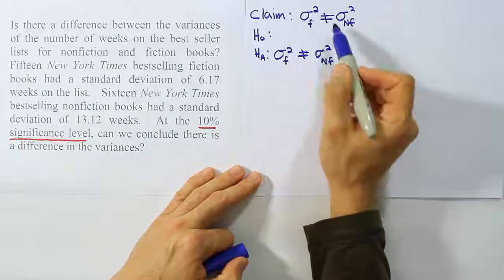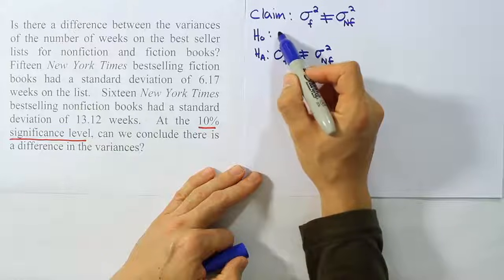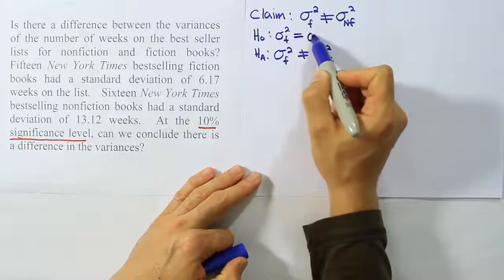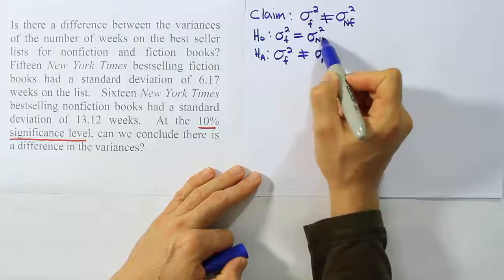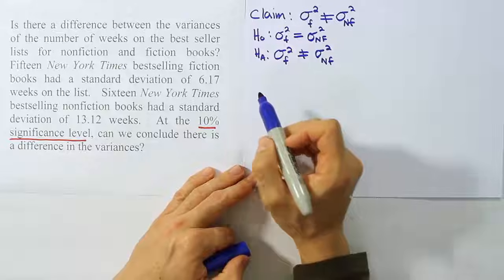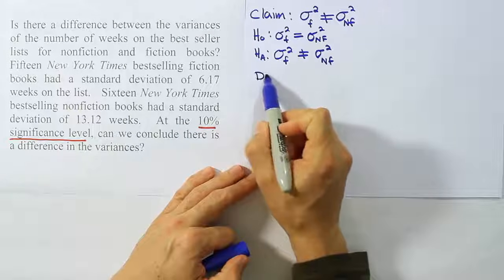And then for H₀, we'll have the opposite of that, which is going to be equal to. So sigma squared for fiction is equal to sigma squared for non-fiction. Alright, so we have our claim, our H₀ and Hₐ. Our next step is to usually record the data. So let's do that.